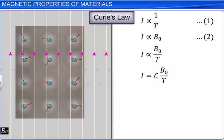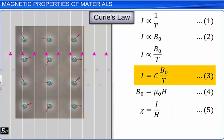We know that B0 is equal to mu0 times H. We also know that the ratio of magnetization to magnetic intensity is magnetic susceptibility; that is, chi is equal to I by H. Substituting these equations and simplifying, we get chi is equal to C times mu0 by T. This is known as Curie's Law, where C is called Curie's Constant.